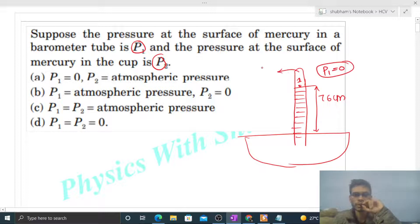So there is pressure at P1 that will be zero because barometer tube in the middle vacuum hota hai. Yahan pe koi air nahi hota so koi pressure nahi hoga.